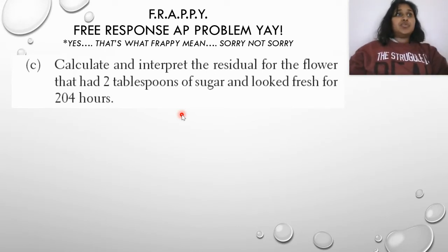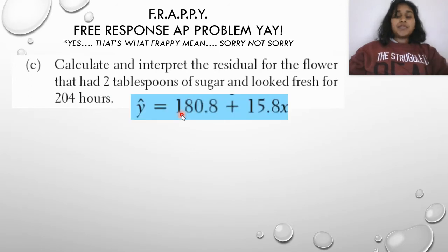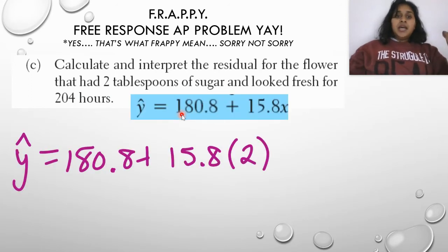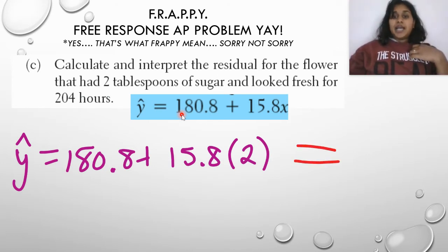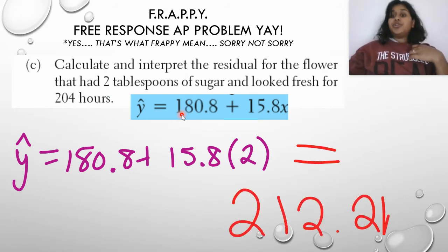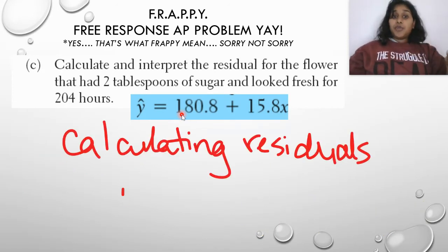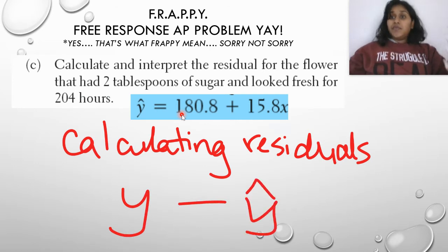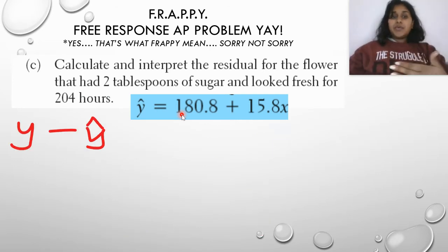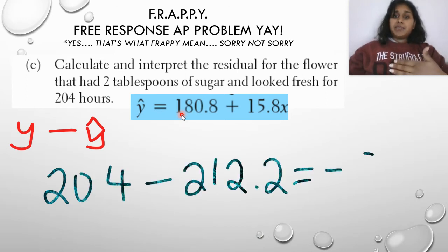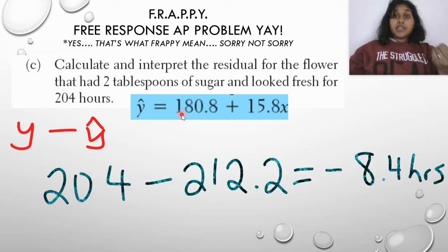Remember — advanced placement — actual minus predicted. Here's our y-hat from the previous question B. I went ahead and calculated y-hat at two tablespoons: I plugged in my two and I got 212.2 hours. So there's my y-hat. Now I still have to calculate the residual using the formula y minus y-hat, or actual minus predicted. They gave me the actual in the question — 204 hours. So I got negative 8.4 hours as my residual at this point of two tablespoons.